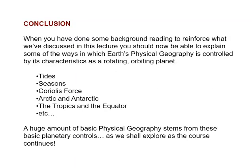By way of conclusion to this pair of mini-lectures: after some background reading to reinforce what we've discussed, you should be able to explain some of the ways in which Earth's physical geography is controlled by its characteristics as a rotating, orbiting planet. We've briefly looked at tides, seasons, Coriolis force, the definitions of the Arctic, Antarctic, the tropics, and the equator. A huge amount of basic physical geography stems from these fundamental planetary controls, which we'll continue exploring as the course proceeds.